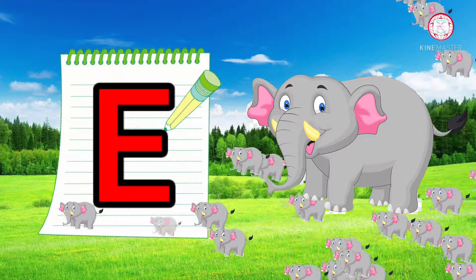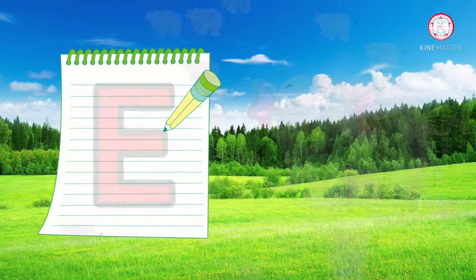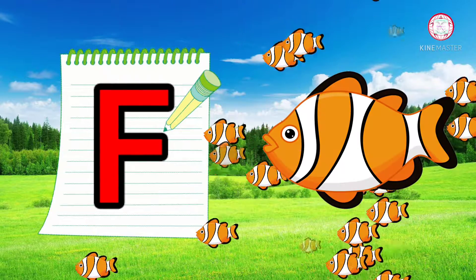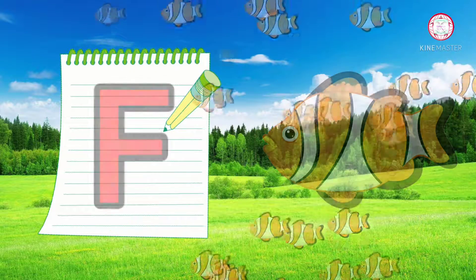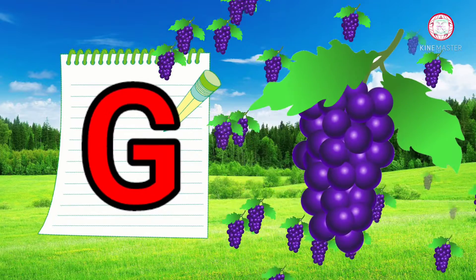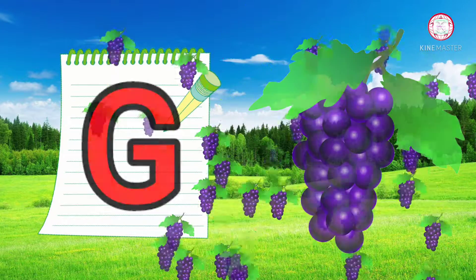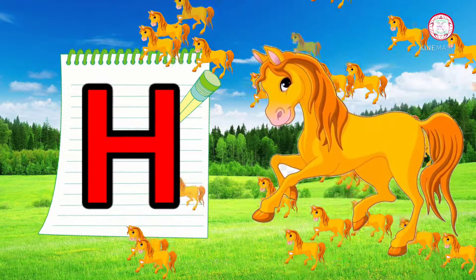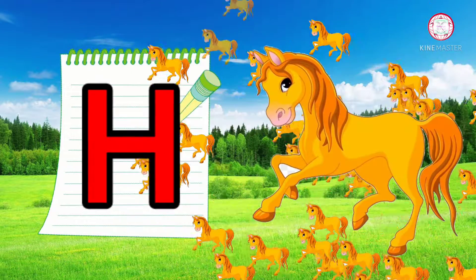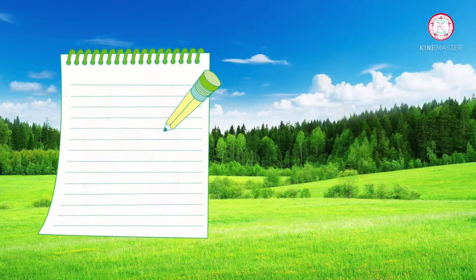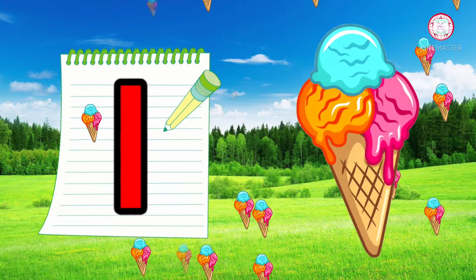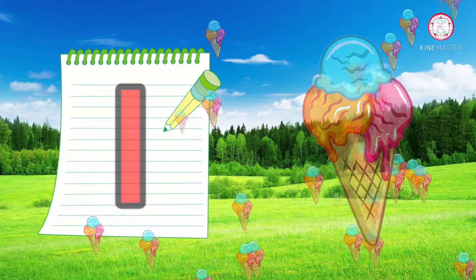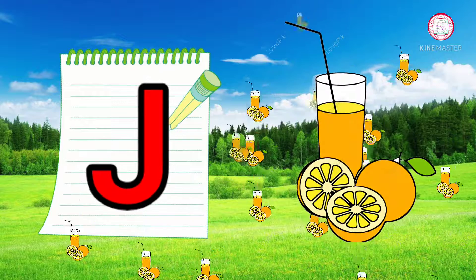E. E for elephant. F. F for fish. G. G for grapes. H. H for horse. I. I for ice cream.